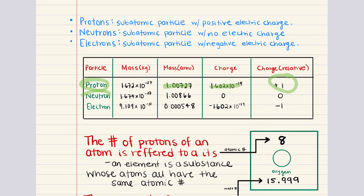Neutrons are neutral — they have no charge, and a neutron's mass is only slightly higher than that of the proton. Taken together, the protons and neutrons of the nucleus make up almost the entire mass of an atom.